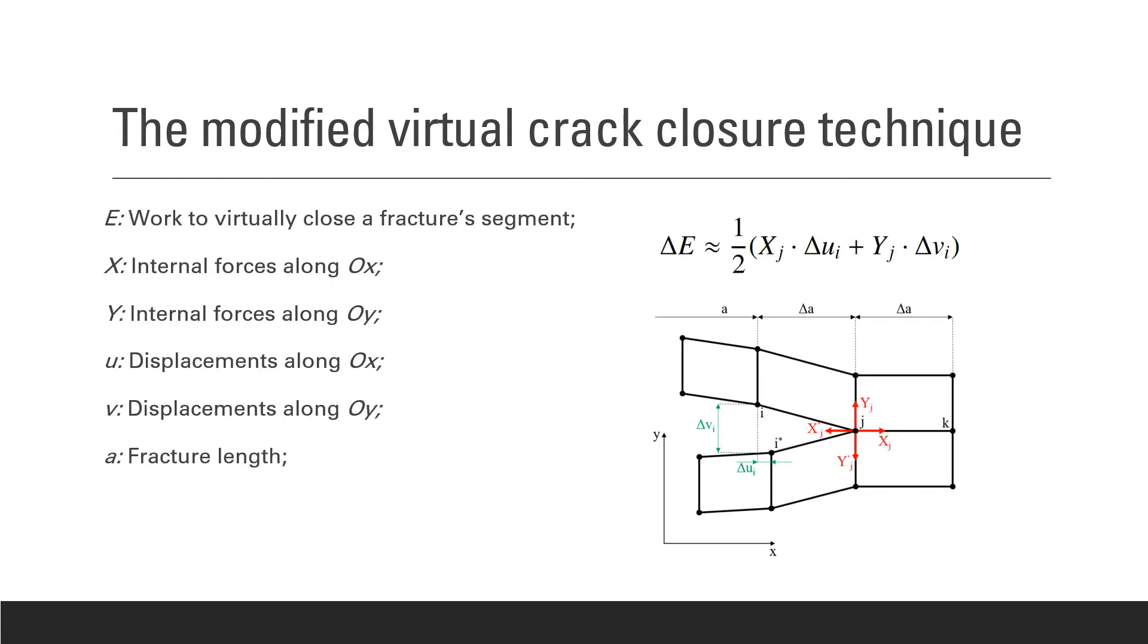Now this necessary work to close the segments of the crack can be calculated as shown here, but it should be noted that internal forces X_J and Y_J are relative to the node J, which is the crack tip, while the displacements U_I and V_I are relative to the neighboring nodes I and I asterisk, since the nodes separated. This means that the work is an approximation, since the internal forces and displacements are relative to different yet very close nodes. This is a particularity of the modified virtual crack closure technique, which assumes that the crack extension of delta A does not significantly alter the state at the crack tip.